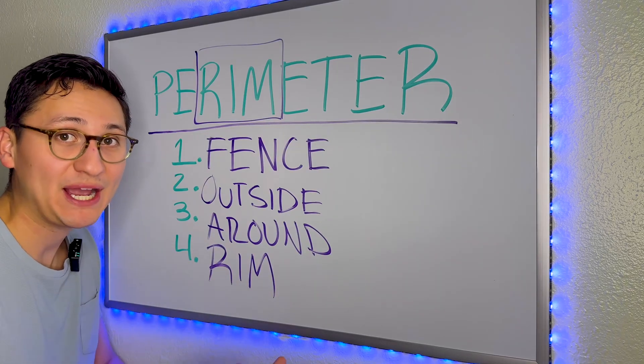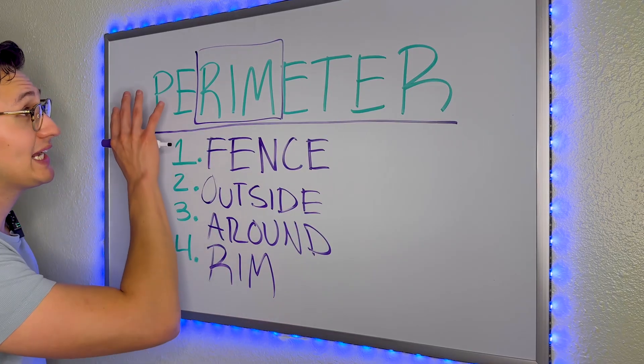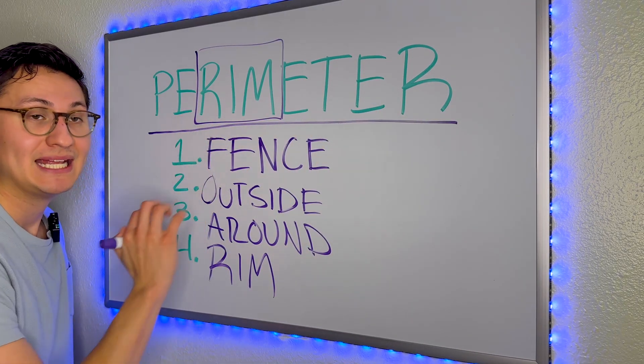The fourth and final word before we get into the problems is going to be rim. Because if you look at the word perimeter, it contains the word rim.